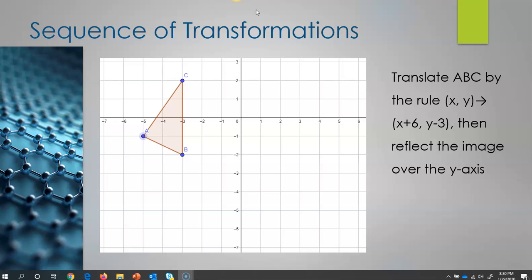The first thing it asks for us to do is a translation, and we're going to follow this rule. We're going to go X is going to increase by 6 and Y is going to decrease by 3. So that's going to be the first thing that we're going to do.